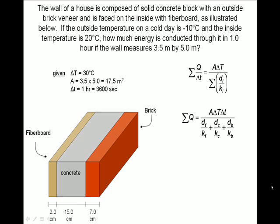After cross-multiplying the time interval and expanding the sum of the ratios of thickness divided by the conductivity, we come up with the equation shown. The thickness for each material was not listed in the given data because it is shown in the drawing. We can substitute all of the values into our equation.